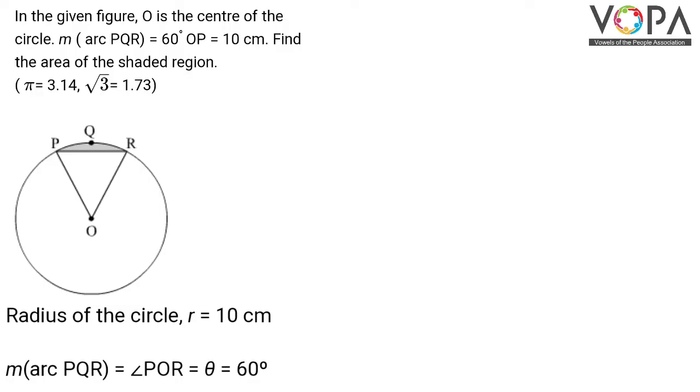In the given figure, O is the center of the circle, major arc PQR is 60 degrees, OP is 10 cm. We have to find the area of the shaded region.